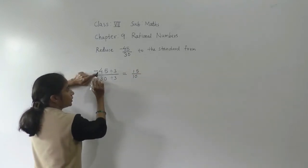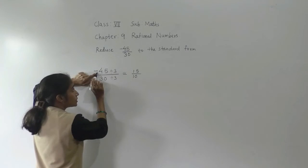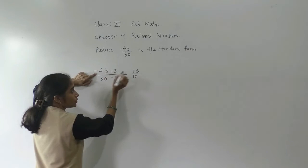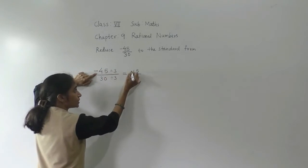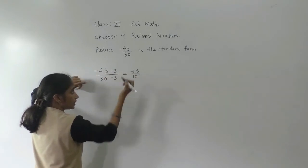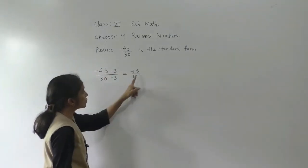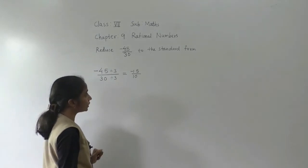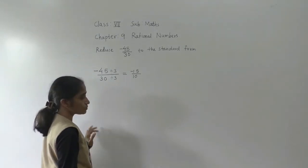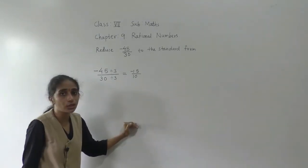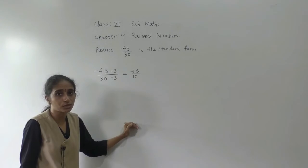Here this number is negative and the denominator is positive. In division, when one number is negative and another is positive, the answer is negative. So we got minus 15 upon 10. We can still reduce this further.